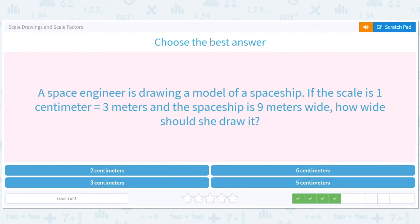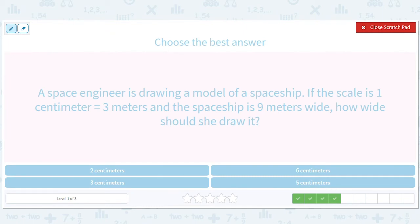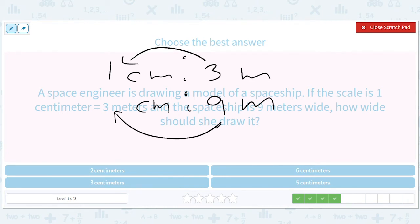A space engineer is drawing a model of a spaceship. If the scale is one centimeter equals three meters. And the spaceship is nine meters wide. How wide should she draw it? Well, what should this be? We've divided by three. So we should divide this by three. Nine divided by three is three centimeters. So she should draw it three centimeters.